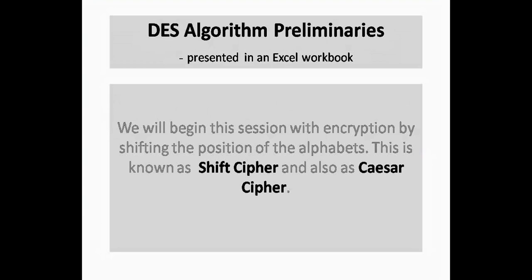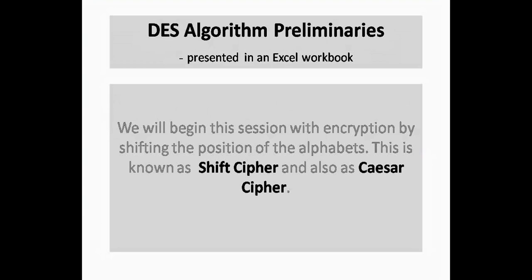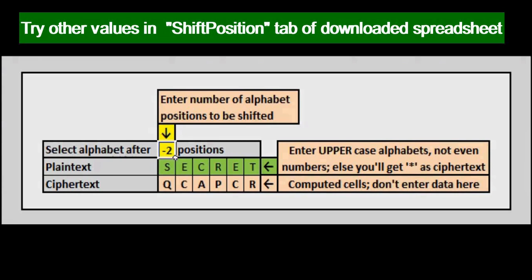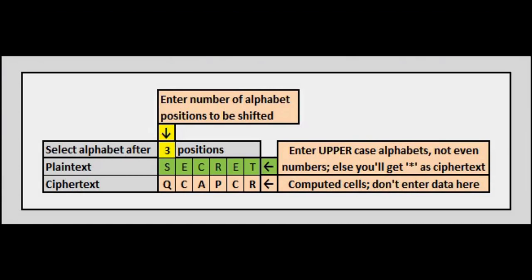We will begin this session with encryption by shifting position of the alphabets. This is known as shift cipher and also as Caesar cipher. My plaintext is secret. In the yellow box, N of 3 is the number of positions to be shifted.